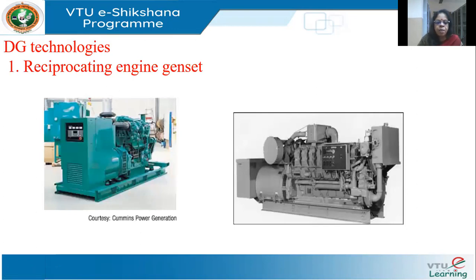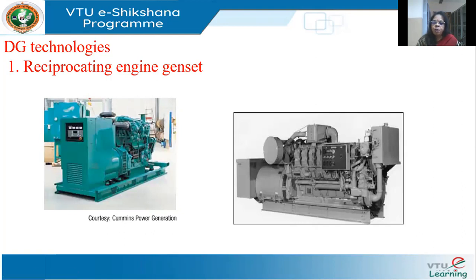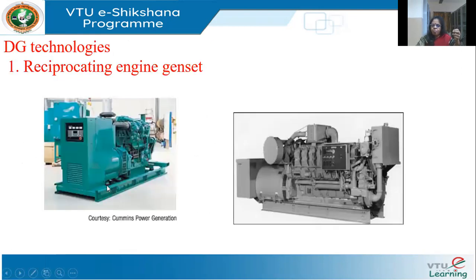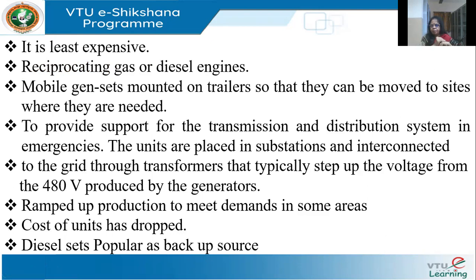What are the technologies available? The first is reciprocating engine gen sets — this is the least expensive. These are reciprocating gas or diesel engines, and they can be mounted on trailers and moved around as a mobile power plant. For example, in a total blackout where auxiliary power has been exhausted and you need to revive the system, mobile gensets can be used. They can also provide support during emergencies such as an unforeseen power demand spike.